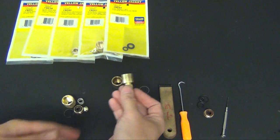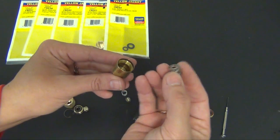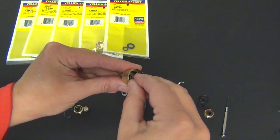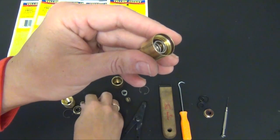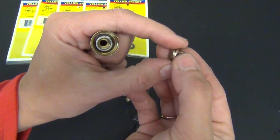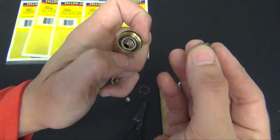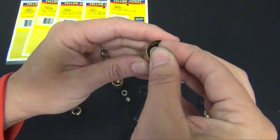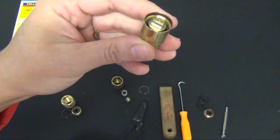Now we'll reassemble. We'll take the new spring and these are not directional so it doesn't matter which way it goes. We'll take the new depressor. You can see the depressor side up and it just sits right on top of the spring.